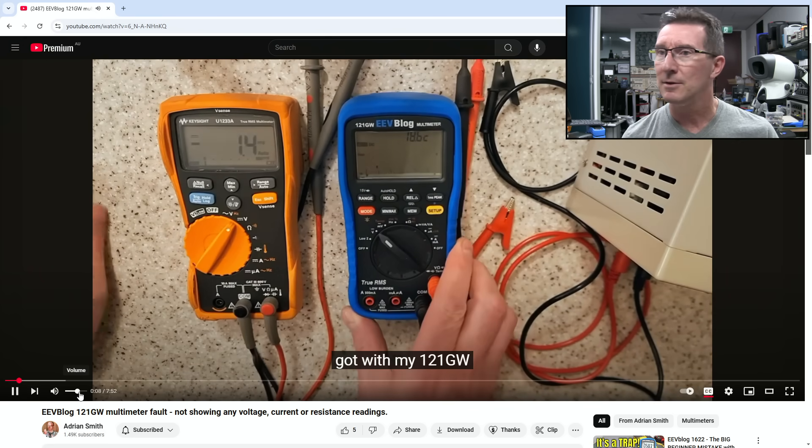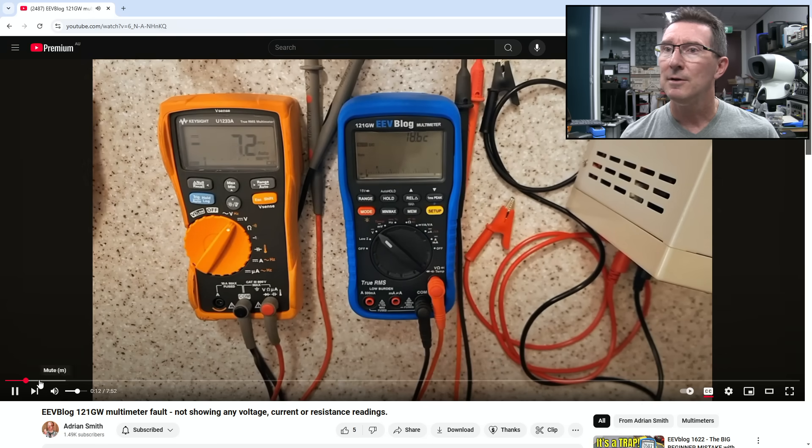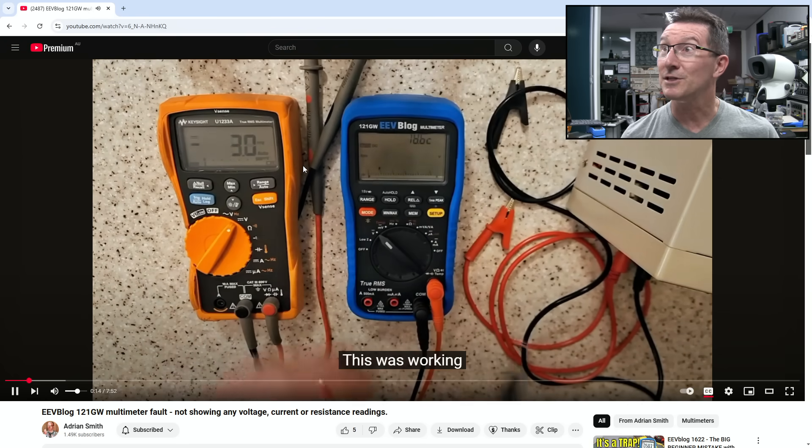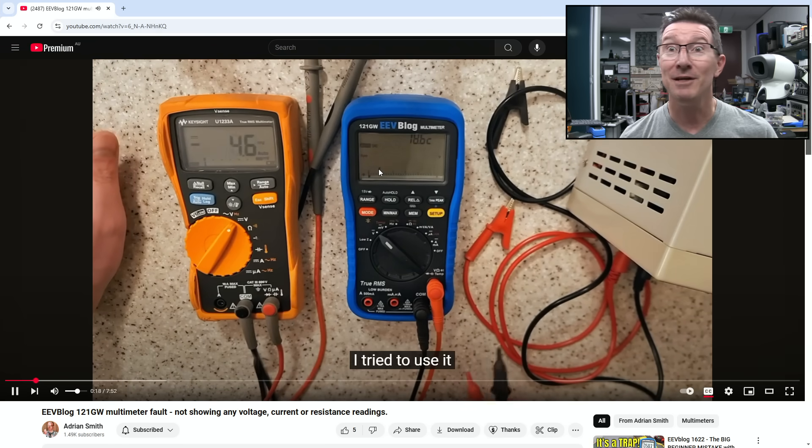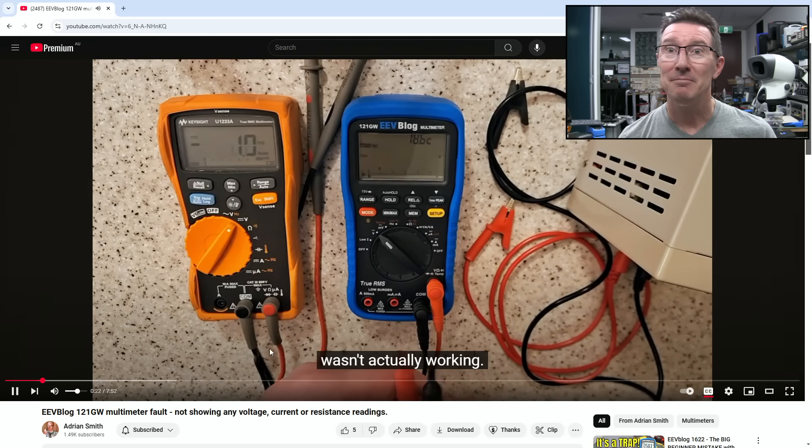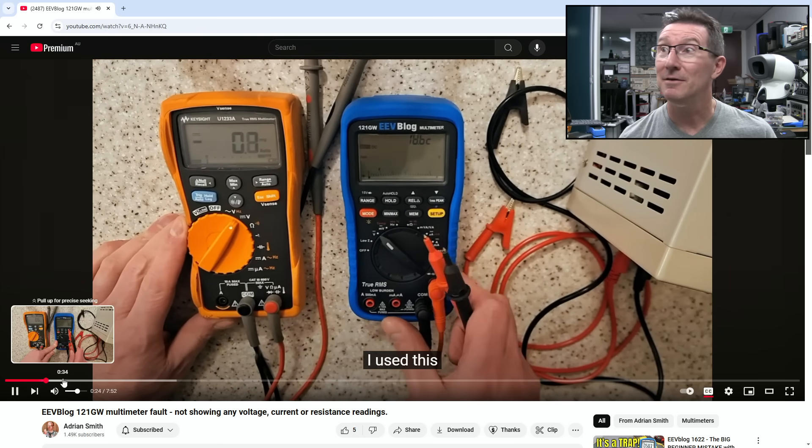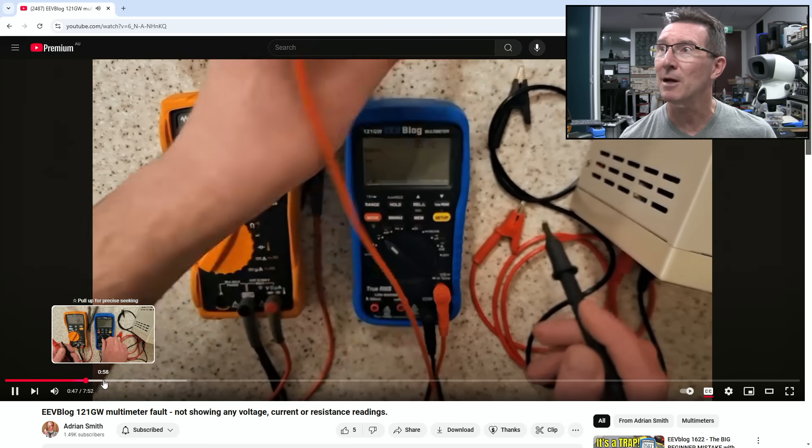Here it is. I'd just like to show you what I've got with my Wood 121GW multimeter from AAVWOG. You can already see it on the screen. Look, it's in voltage mode. There's no reading. It's not updating. It's like he doesn't use it much, apparently.